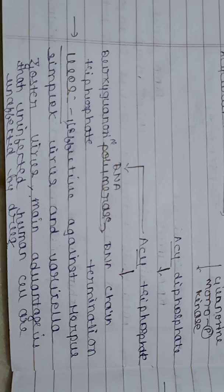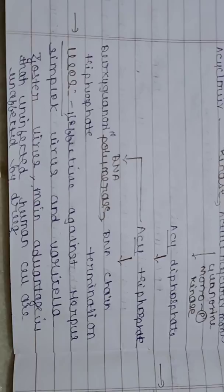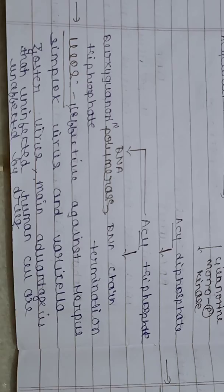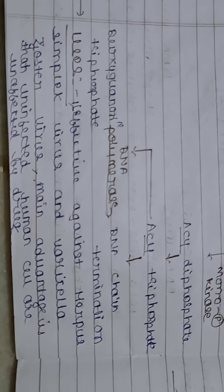Acyclovir is effective against herpes simplex virus and varicella-zoster virus. A main advantage is that uninfected human cells are unaffected by the drug. Unlike many drugs that affect all cells, acyclovir only acts upon infected cells, leaving uninfected cells unaffected. It is highly effective against herpes simplex virus and varicella-zoster virus.